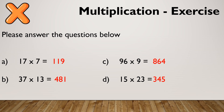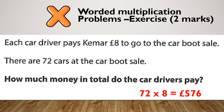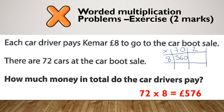Let's have a look at what it's going to look like in an exam situation. Each car driver pays £8 to go to the car boot sale. There are 72 cars at the car boot sale. How much money in total do the car drivers pay? Hopefully you got 576. So I'm going to draw my grid: 72 is 70 and 2, and 8 is 8. 7 times 8 is 56, add my zero — so 560. 8 times 2 is 16. Adding those together gives me 576.